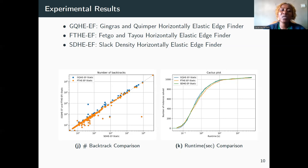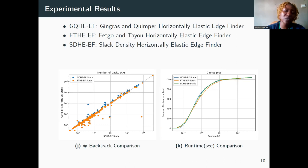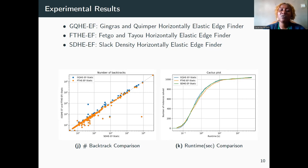The Slack Density Horizontally Elastic Age-Finder in general always solves more instances than the other configurations, whatever heuristic selection is considered. Comparing the number of backtracks of Gingras and Kimper and Fetbo and Tayou with the baseline configuration Slack Density on each commonly solved instance, points above the line y=x indicate that Slack Density records fewer backtracks than other configurations, and points below the line indicate the reverse. In Figure J for static scheduling, many blue points are above the line, meaning that Slack Density filters more than Gingras and Kimper.